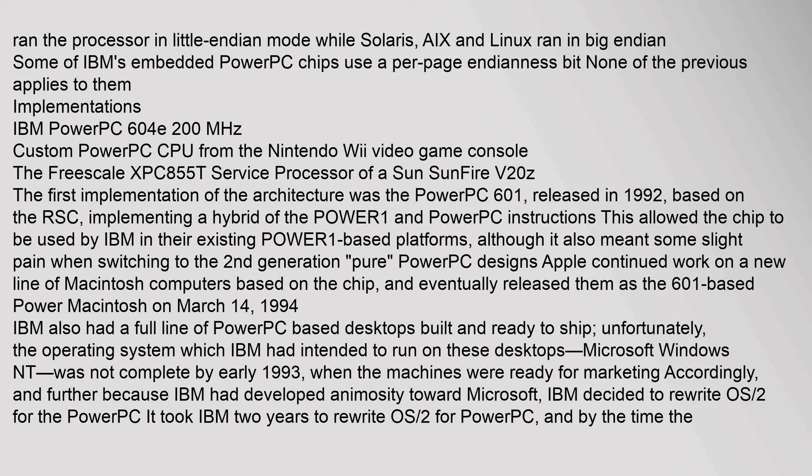The first implementation of the architecture was the PowerPC 601, released in 1992, based on the RSC, implementing a hybrid of the POWER1 and PowerPC instructions. This allowed the chip to be used by IBM in their existing POWER1-based platforms, though it also meant some adjustment when switching to second-generation PowerPC designs. Apple continued work on a new line of Macintosh computers based on the chip and eventually released them as the 601-based Power Macintosh on March 14, 1994.